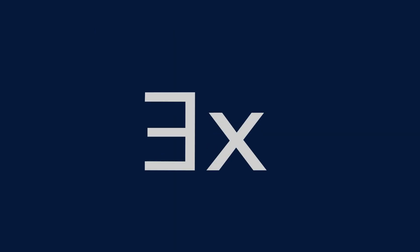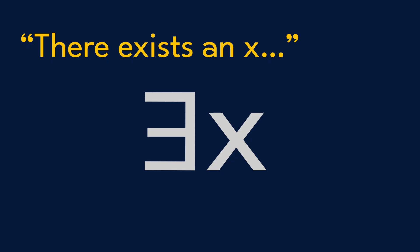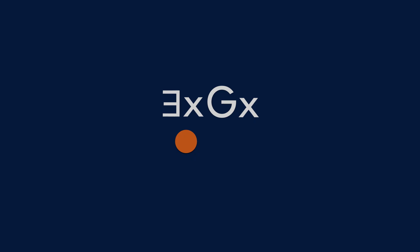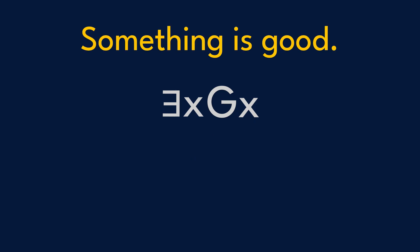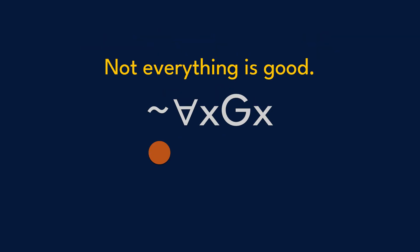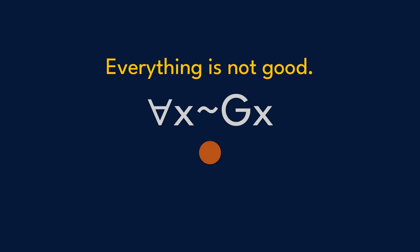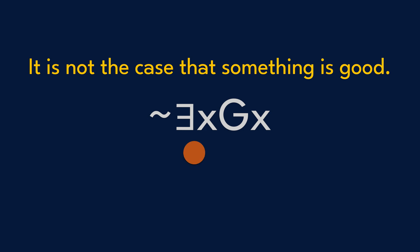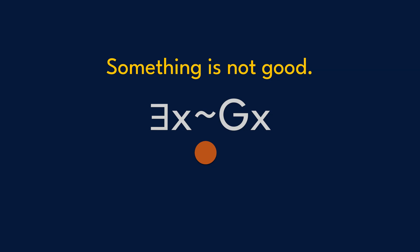And this is the existential quantifier. It says 'there exists an X' — or just 'there is an X.' It gives a very different meaning to the variable: 'There is some X such that X is good.' Something is good. We can also throw in the negation symbol to get a combination of different meanings: 'Not everything is good.' 'Everything is not good.' 'It is not the case that something is good.' 'Something is not good.'